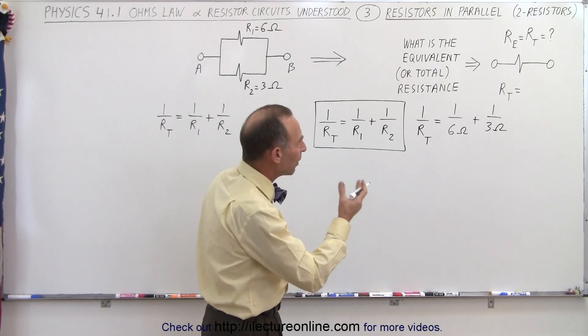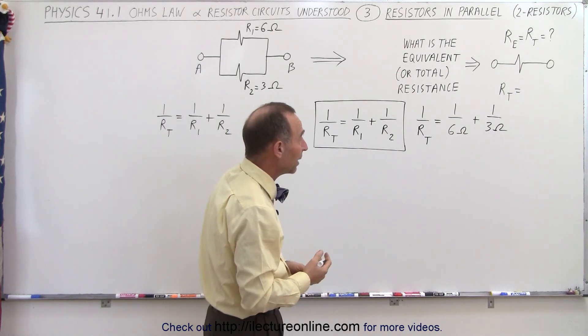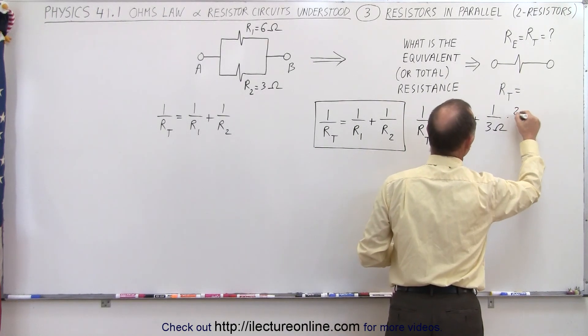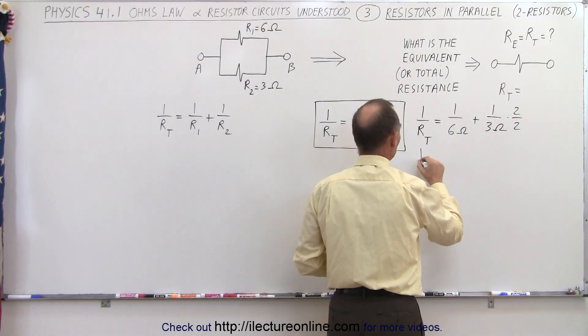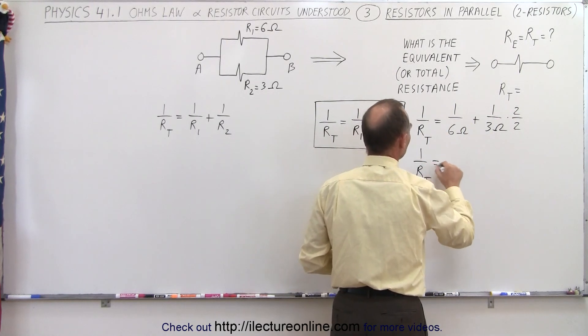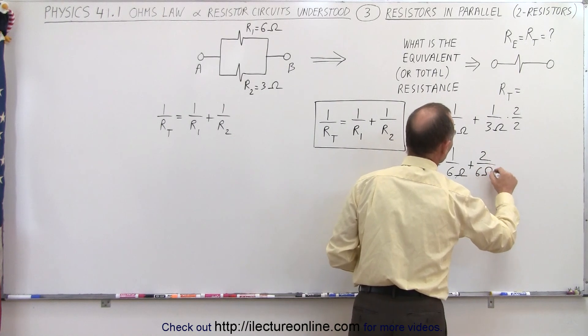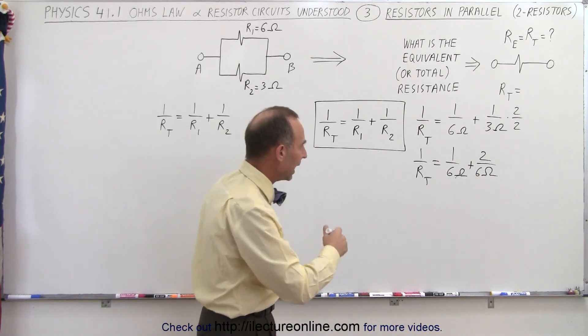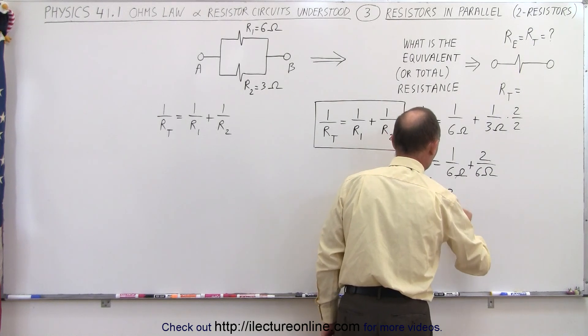But notice that we have two fractions that have different denominators. So we should find a common denominator. We can multiply this one by, for example, 2 both. So if we multiply this by 2 and multiply this one by 2, then we have the same denominators we have over here. So 1 over R total is equal to 1 over 6 ohms, and plus 2 over 6 ohms. Now we have, on the right side, two fractions that have the same denominator. We can add them now. So we have 1 over R total is equal to 3 over 6 ohms.